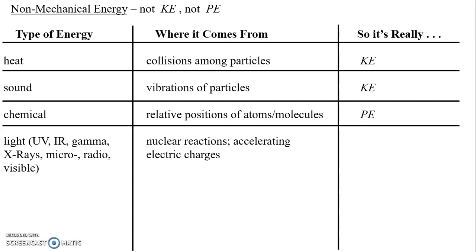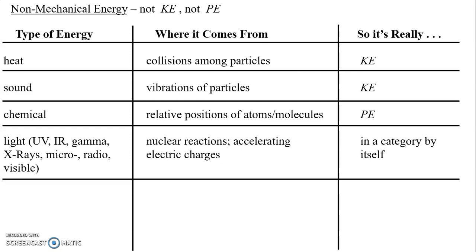When these charged objects accelerate, it might sound like kinetic energy — but that's not actually true. When they accelerate and radiate, they actually lose the energy; they don't have it anymore. So it turns out light is in a category all by itself, unlike any other type of energy. We'll come back to this idea later in the year and talk much more about it.